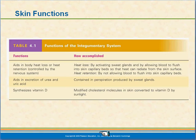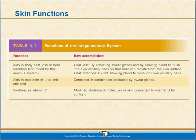It aids in the excretion of urea and uric acid, which are contained in perspiration produced by sweat glands. Generally these are released through the kidneys. However, if you've known someone undergoing dialysis, after a couple of days they get a yellowish crystal coating on them called a uremic glow — that is the sweat glands trying to get rid of toxins through the surface of the skin. We also synthesize vitamin D — sunlight reacts with cholesterol to produce a precursor to vitamin D.